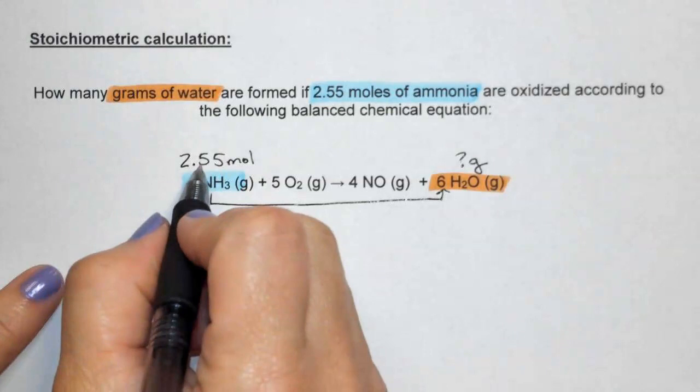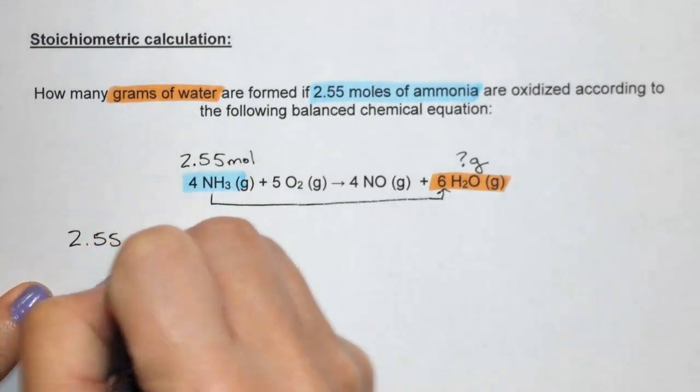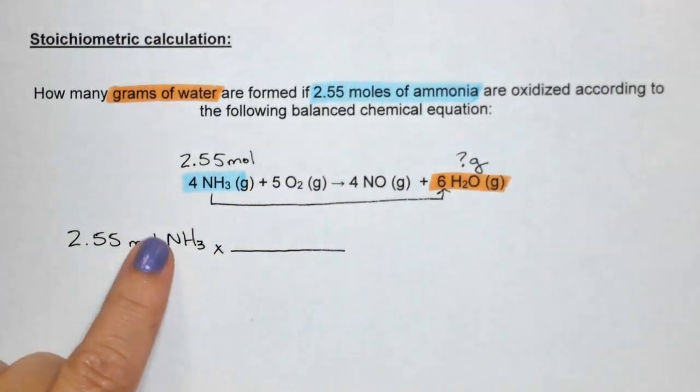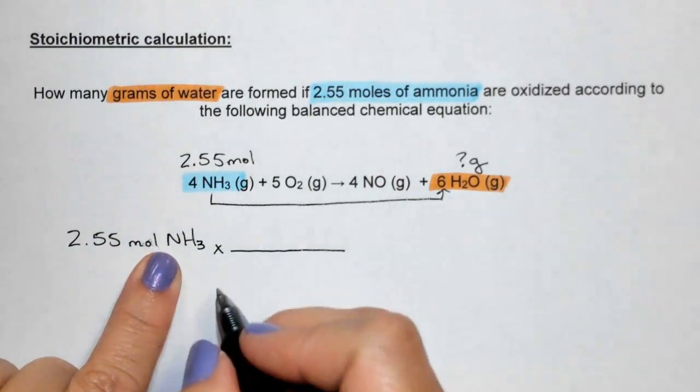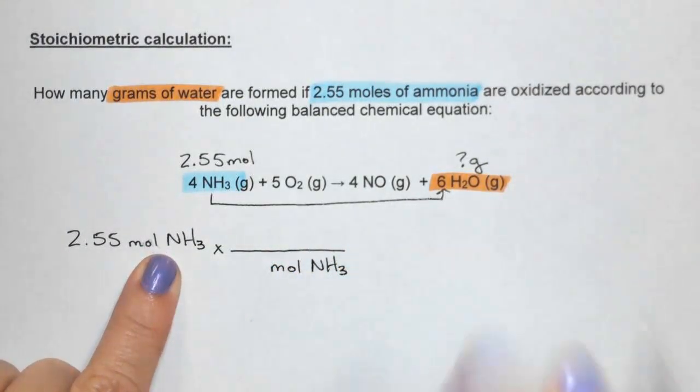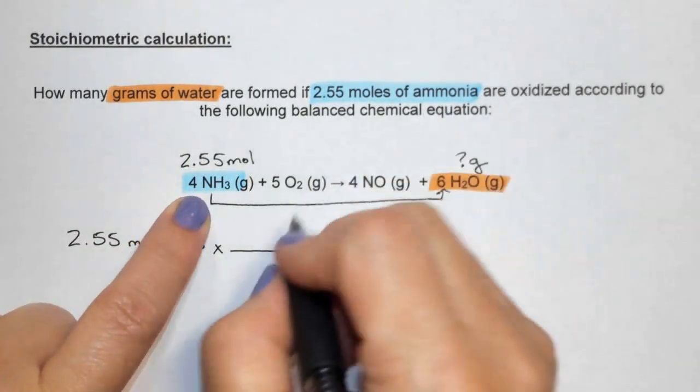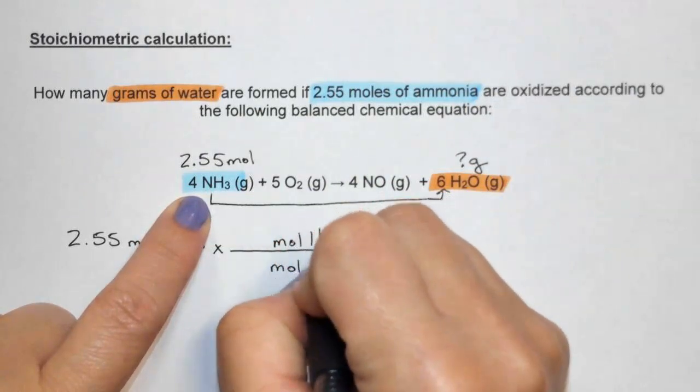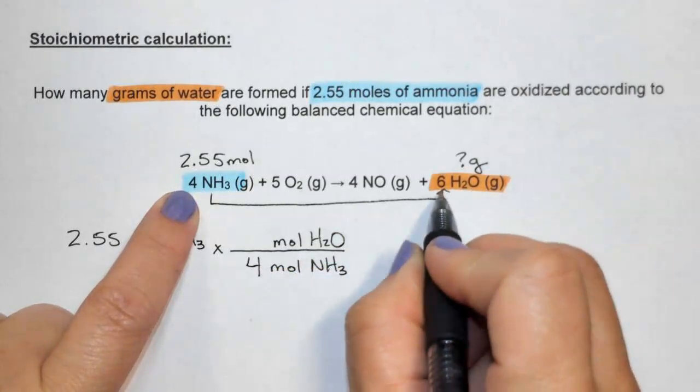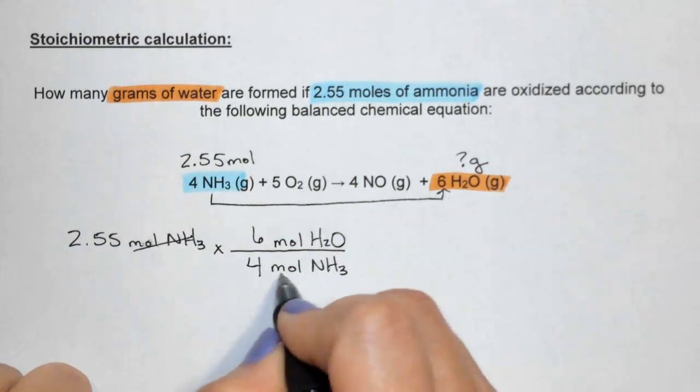We're going to start with our given amount, 2.55 moles of ammonia. Draw a line. Now we want to take moles of ammonia and bring it down to the bottom. Don't carry down numbers. This is our opportunity to switch from moles of ammonia to moles of water by doing our mole-to-mole ratio: 4 moles of ammonia to 6 moles of water. Now we've cancelled the moles. We're now at moles of water, but we want to end on grams of water.